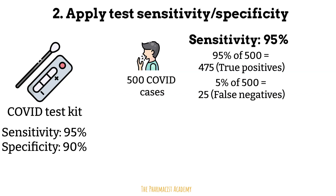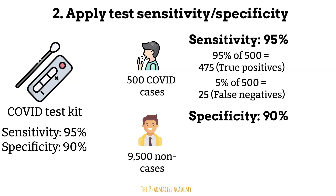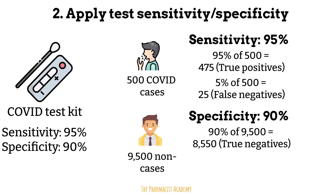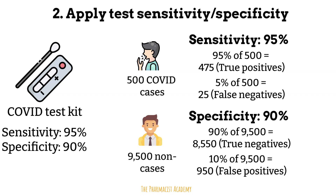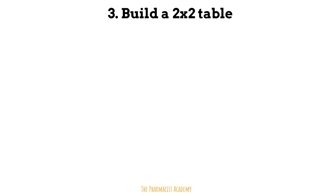In specificity, we only care about people who do not have the disease. In this scenario, 9,500 people do not have the disease. A 90% specificity means the test is able to correctly identify 90% of the non-cases as negative. So 90% of 9,500 is 8,550 — these are the true negatives. The remaining 10% of non-cases will be 950, which are false positives. Based on this information, we can build a two-by-two table and calculate the PPV and NPV.